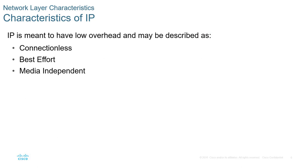Characteristics of IP in both versions: it's connectionless, it's best effort, and it doesn't care what layer 2 technology you're using. It doesn't matter if you're using Ethernet, Frame Relay, or any other form of layer 1 or layer 2 connectivity. All it does is dump the IP packet into a frame, and it's a layer 2 issue from there.